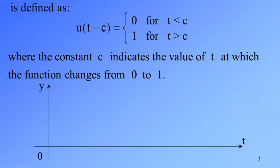For the diagram, we have y and t-axis. When the value of y is going to change, before time t equal to c, the value of y is 0, and then after which the value of y is 1. And this is the graph of u(t-c).